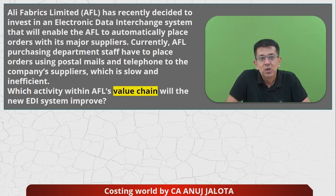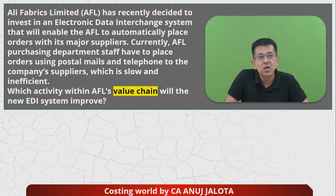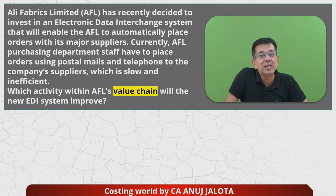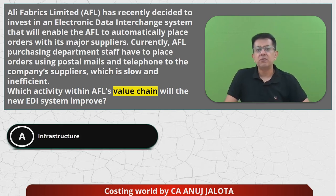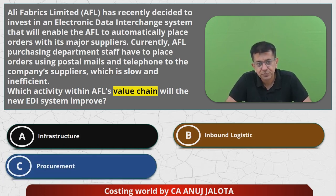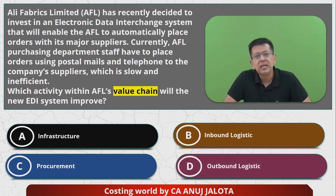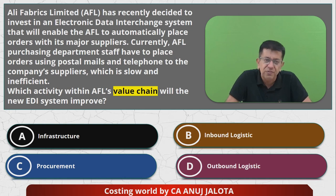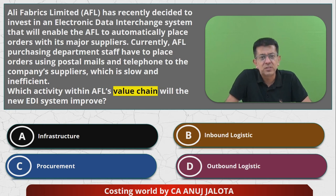This is quite simple. In the value chain there are five primary activities and four secondary activities. The four options are: A — Infrastructure, B — Inbound Logistics, C — Procurement, and D — Outbound Logistics. The answer here should be C. This is a process that will help you procure your raw materials far faster — it's going to be an automatic process instead of the current manual process.